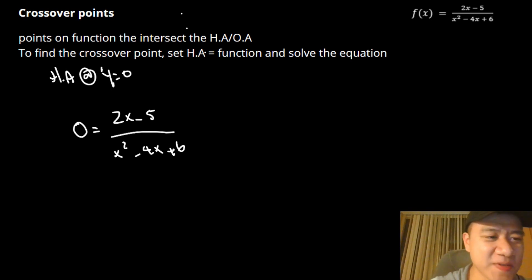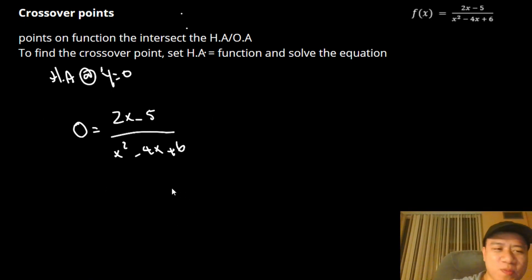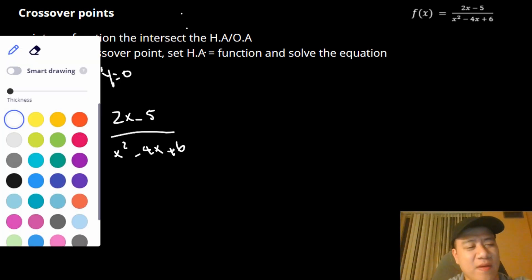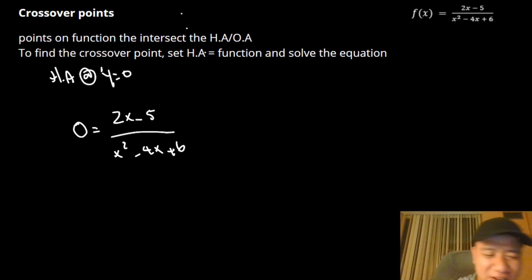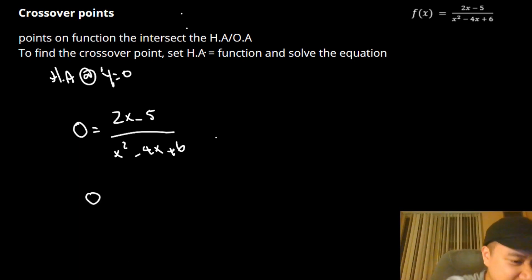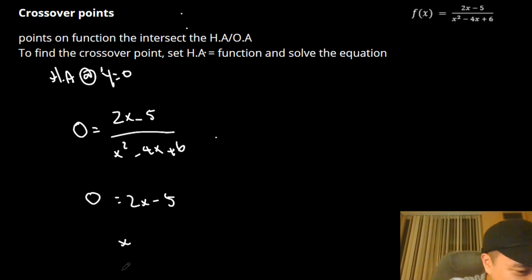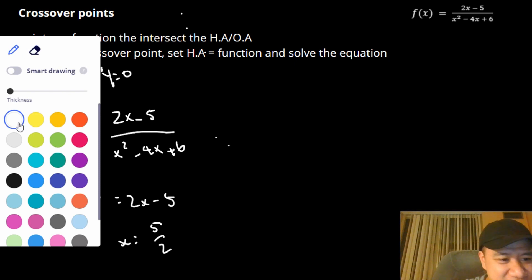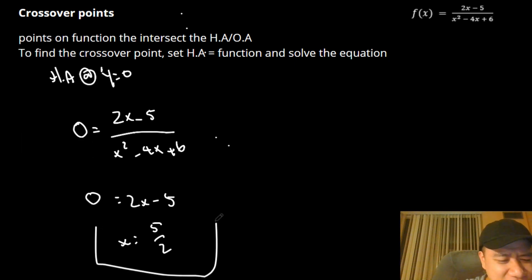We solve this equation to get our x value — that tells us where our crossover point is. We multiply both sides by the denominator. Since we have zero on the other side, we're left with 0 = 2x − 5, so x = 5/2. There's our crossover point.